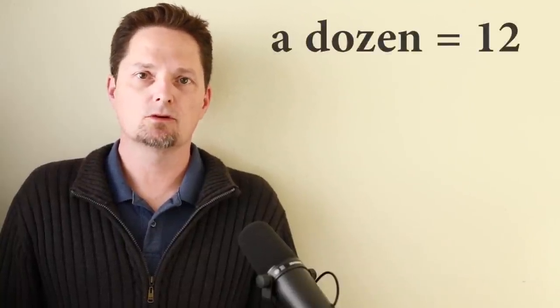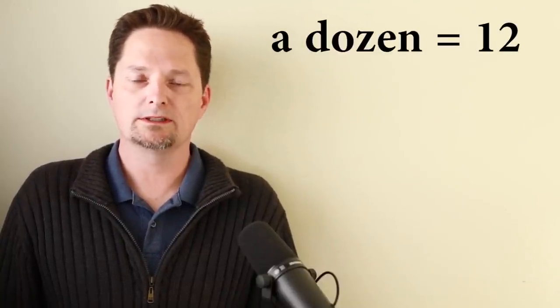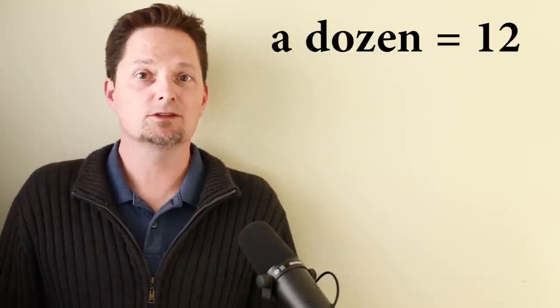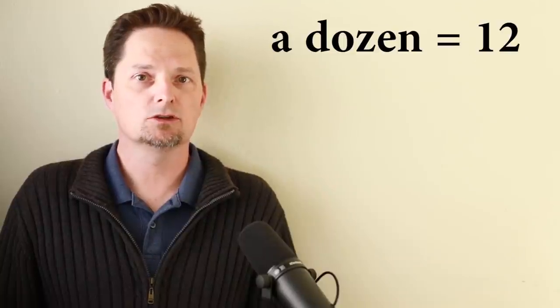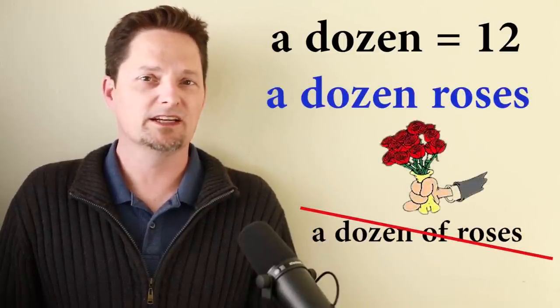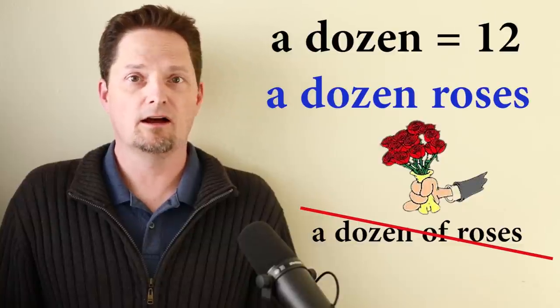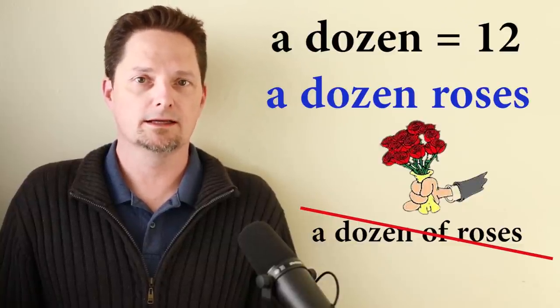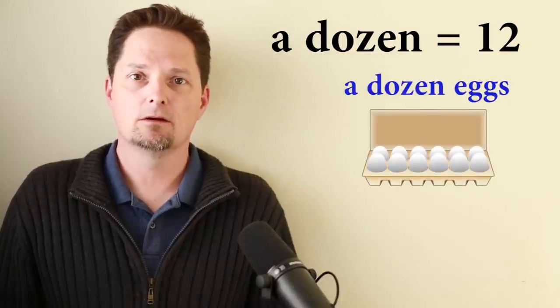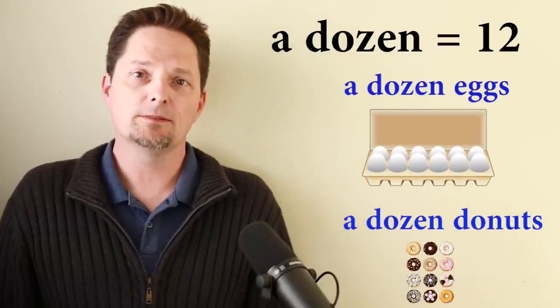A common mistake is saying 'This is a dozen of eggs.' So let's see how to use dozen correctly. A dozen is twelve. For one, we say 'a dozen' — it's one unit, but it's twelve things. For example: a dozen roses. We cannot say 'a dozen of roses.' Of cannot be used in this case. Only 'a dozen roses,' or 'a dozen eggs,' or 'a dozen donuts.' It means twelve.